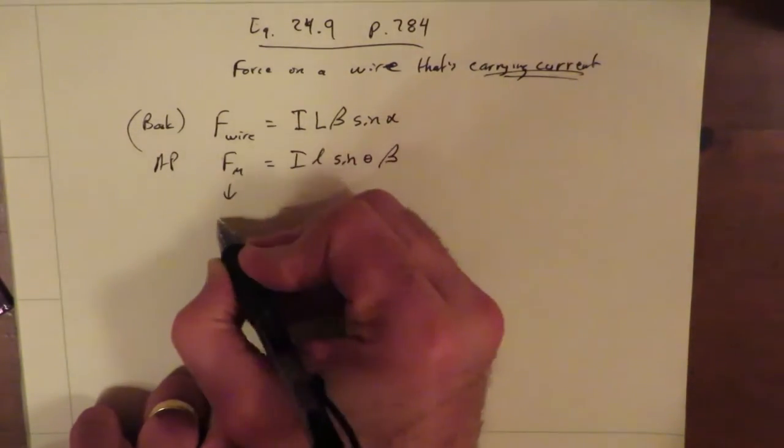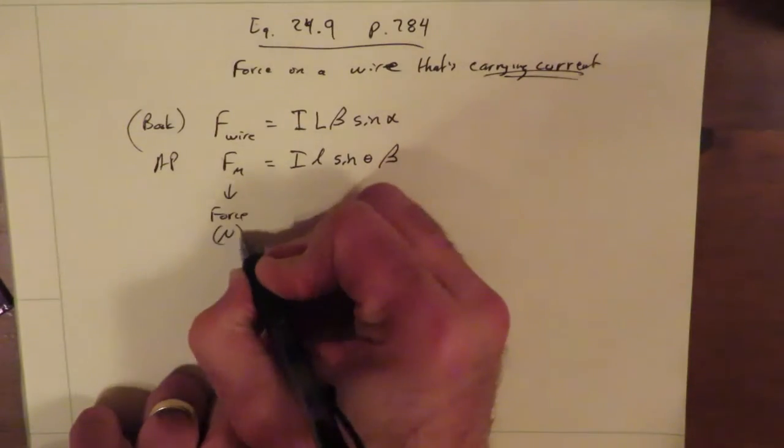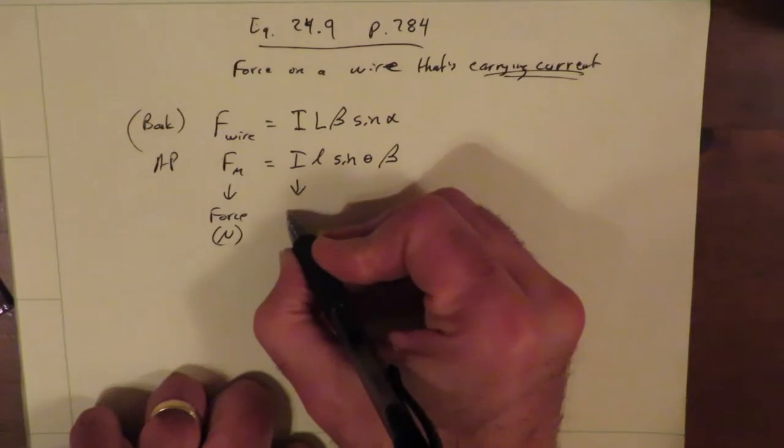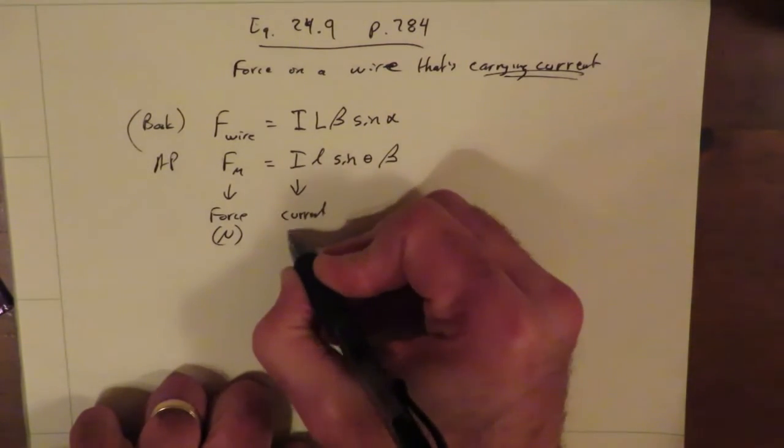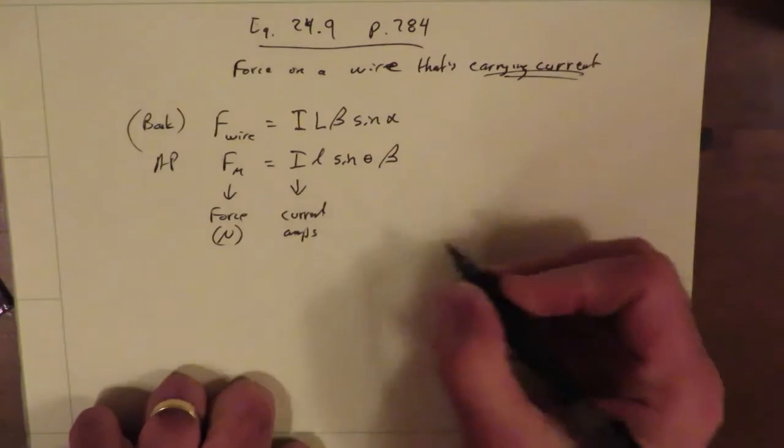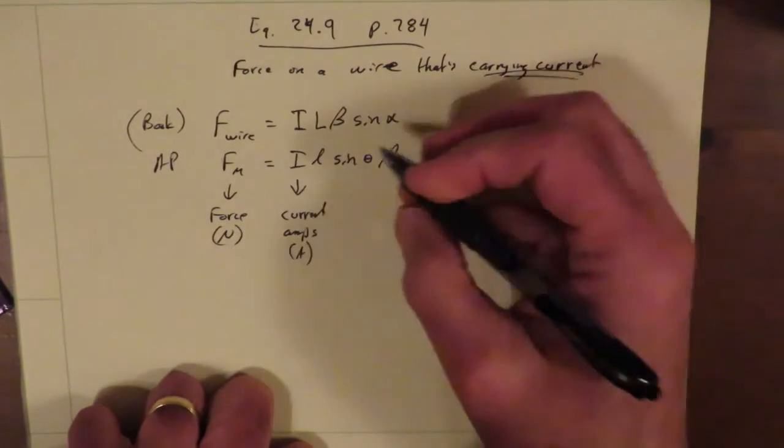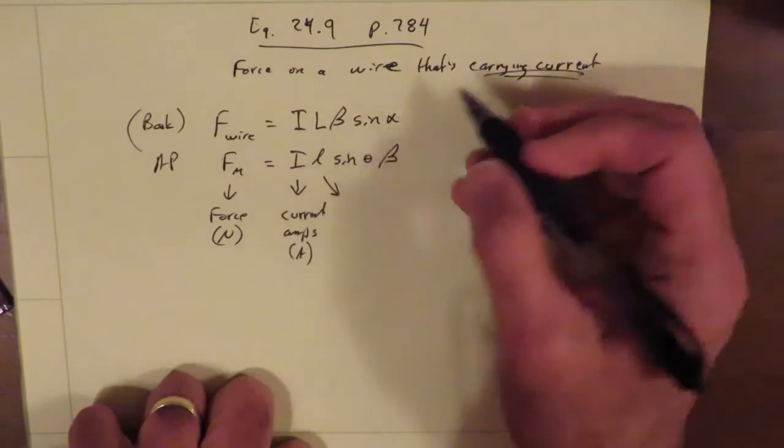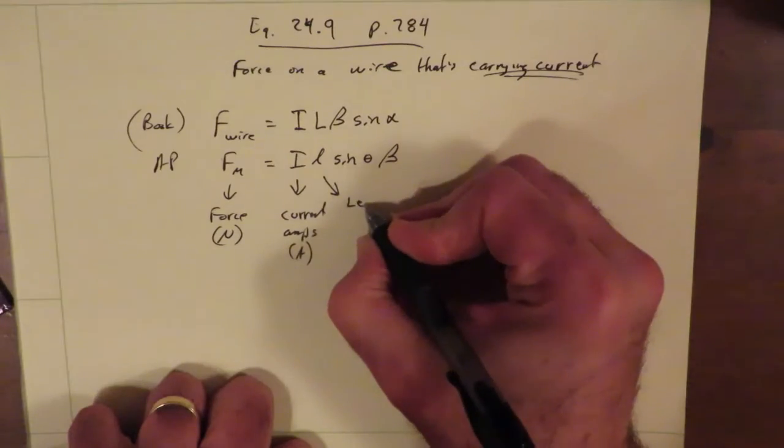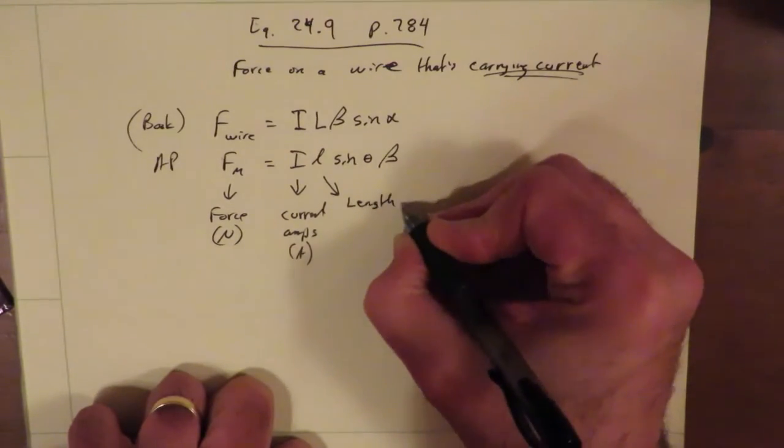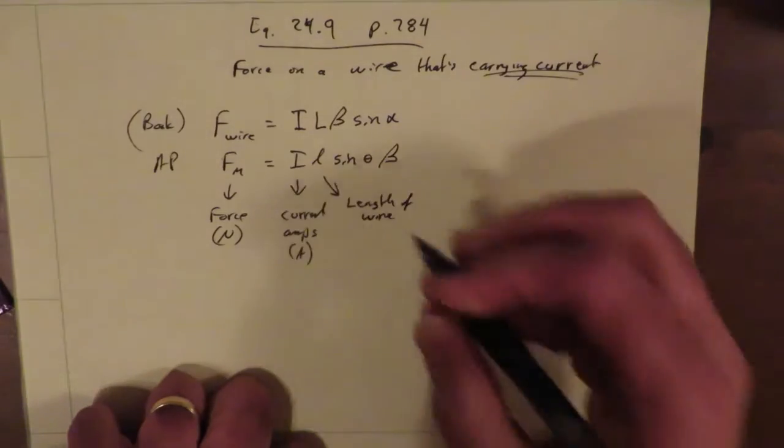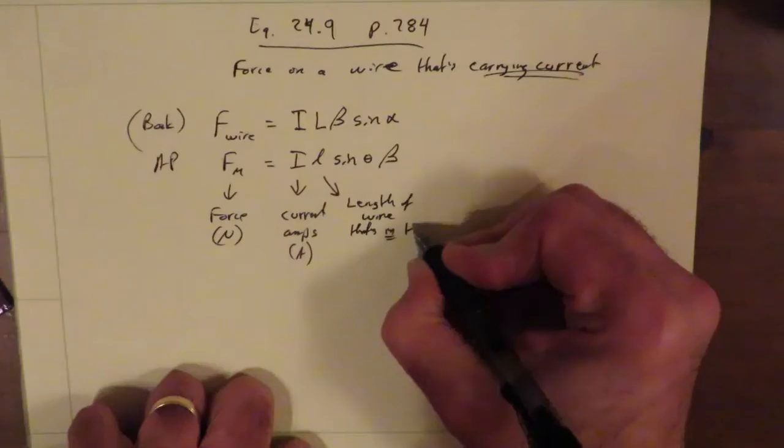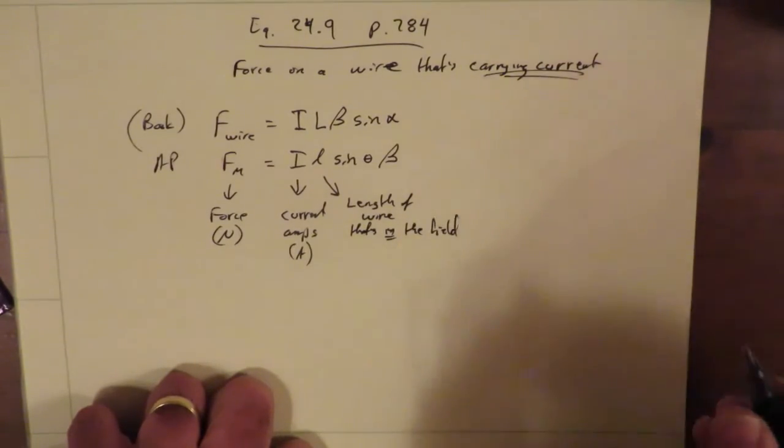Now, what does all this mean? Okay, this is, again, this is the force in Newtons. Force in Newtons. I is just what it's always been. It is the current in amps. Okay? Or amps. L, the cursive L for AP and the capital L in the book is the length of the wire, length of the wire that's in the magnetic field. That's in the field.